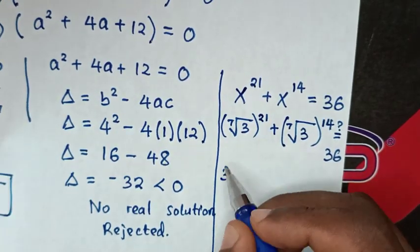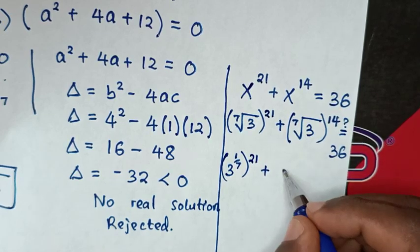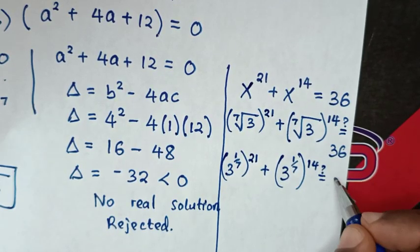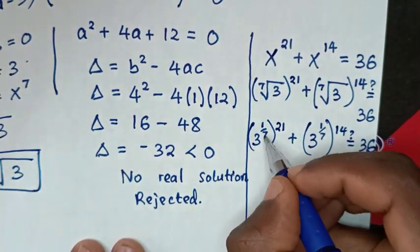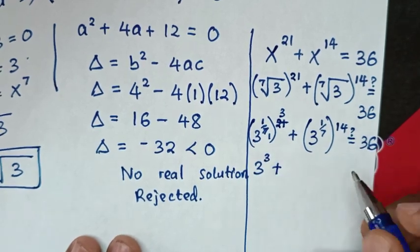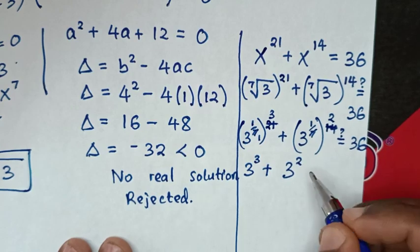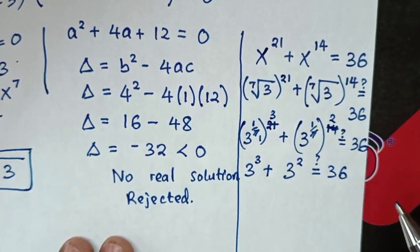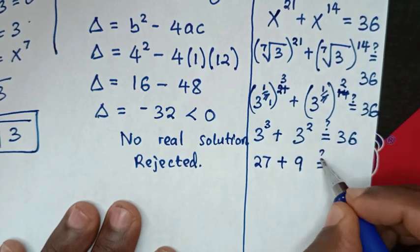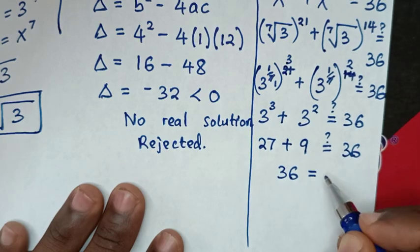Converting to exponents: the 7th root is the same as power of 1 over 7. For the first term, (1/7) times 21 simplifies — 21 divided by 7 is 3 — giving 3 power of 3. For the second term, (1/7) times 14 simplifies — 14 divided by 7 is 2 — giving 3 power of 2. So we get 3 cubed plus 3 squared: 27 plus 9 equals 36, which equals 36. Left side and right side are equal, confirming x equals 7th root of 3 is correct.